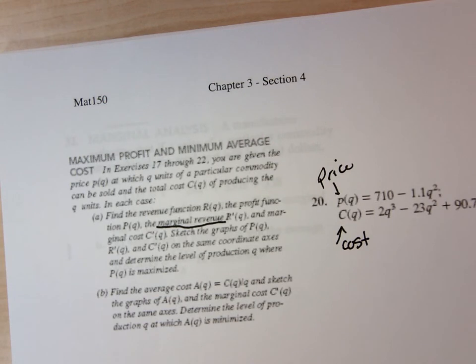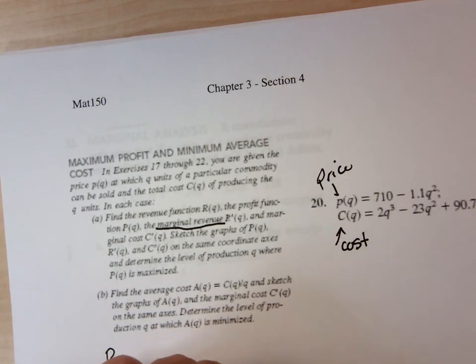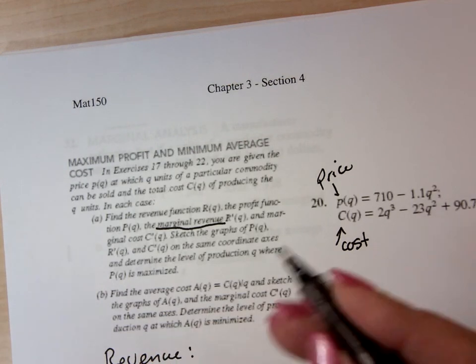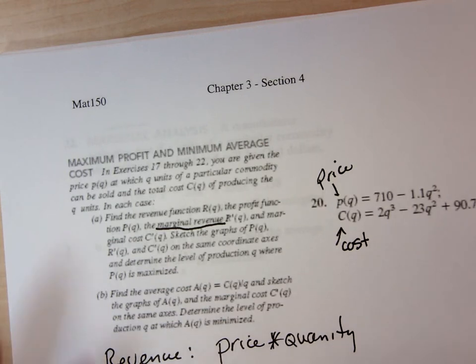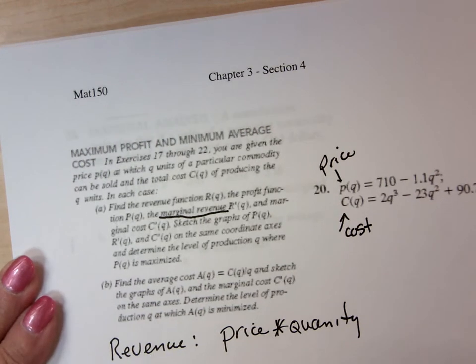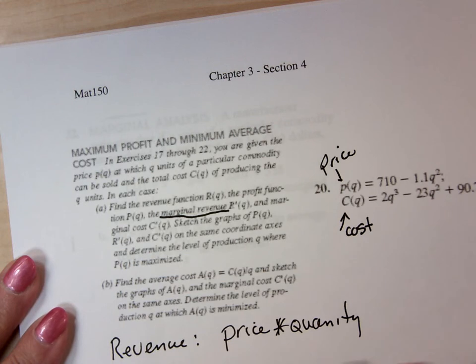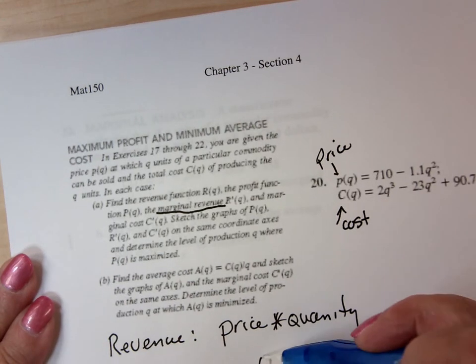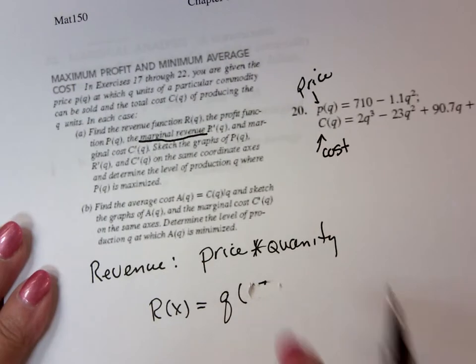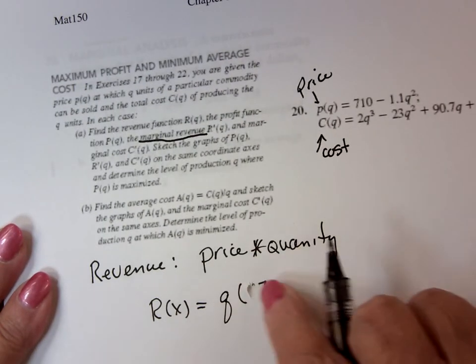Right? That's gross revenue. Now, if I want to do profit, I want to do profit. Profit is revenue minus cost. So if I want to do revenue, revenue is going to be the price of a unit times the quantity. But this is gross revenue.